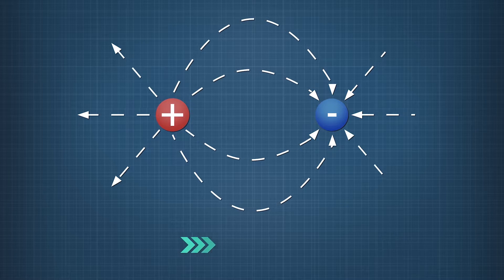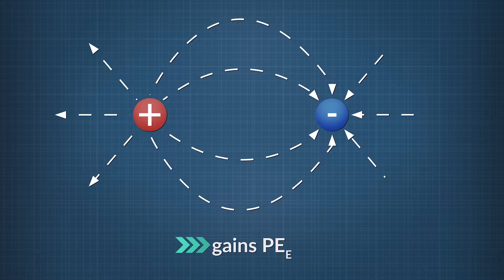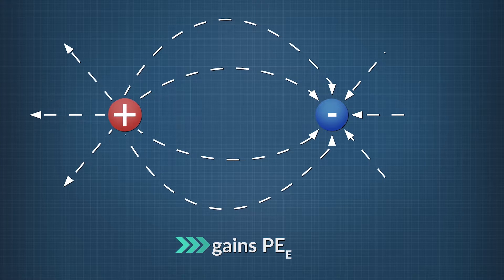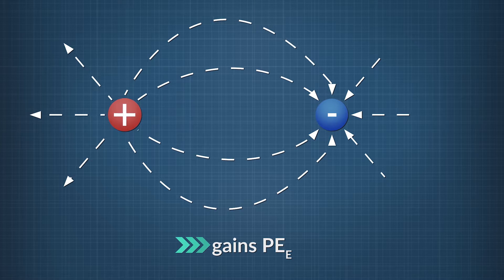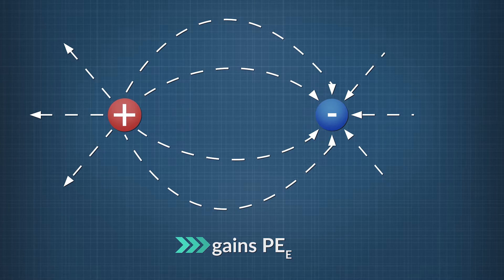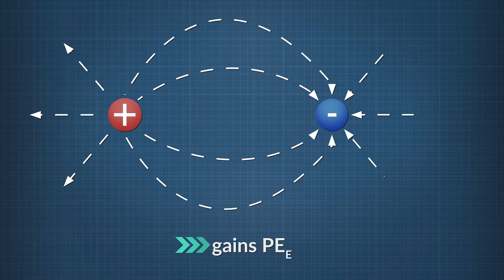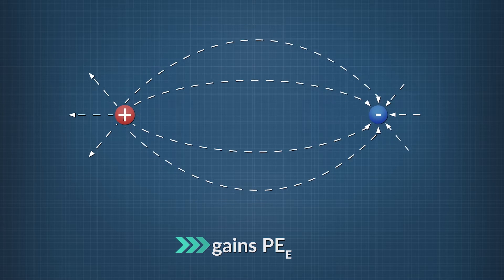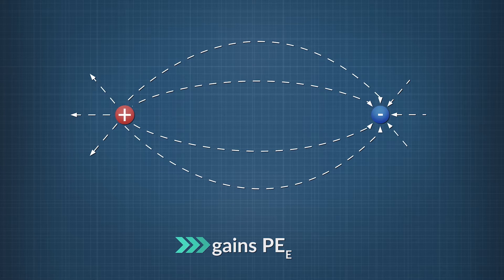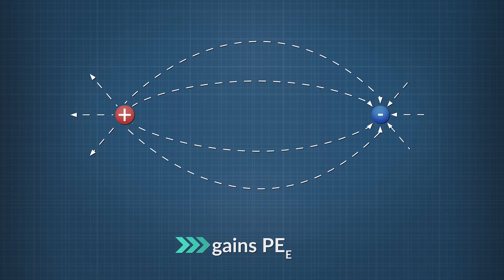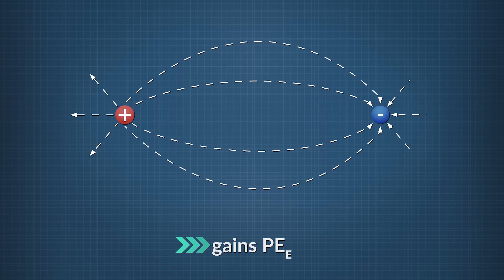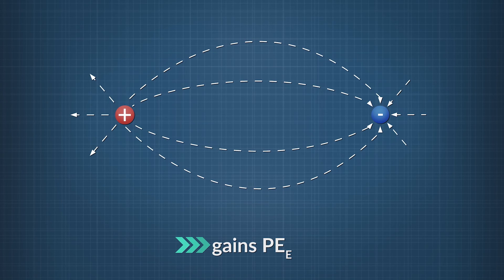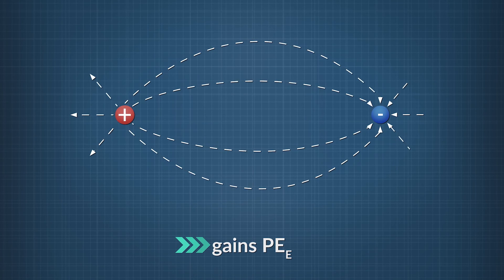A positive charge gains electric potential energy when it is moved in a direction opposite the electric field. A negative charge gains electric potential energy when it is moved in the same direction as the electric field.